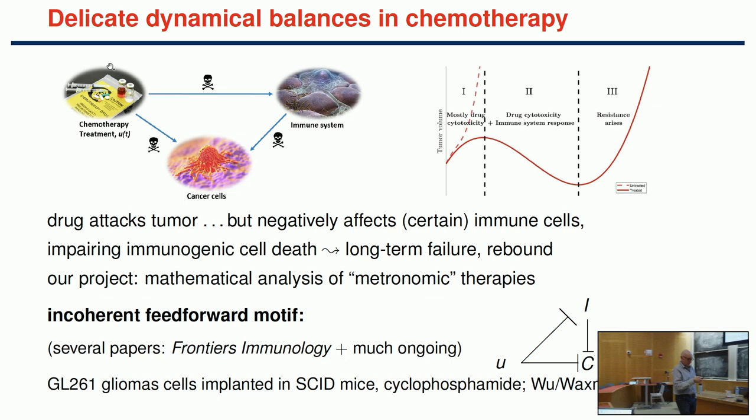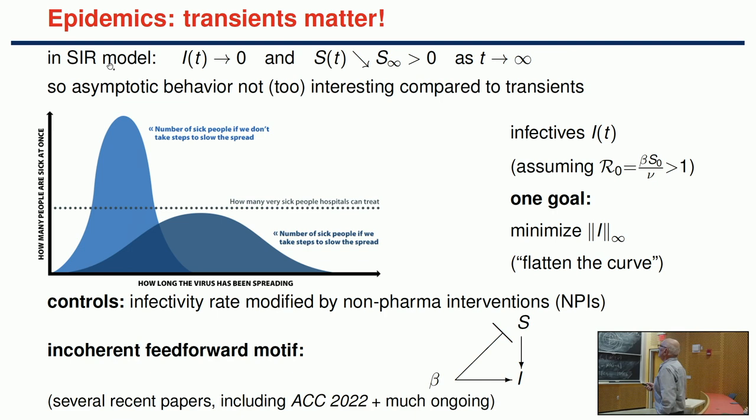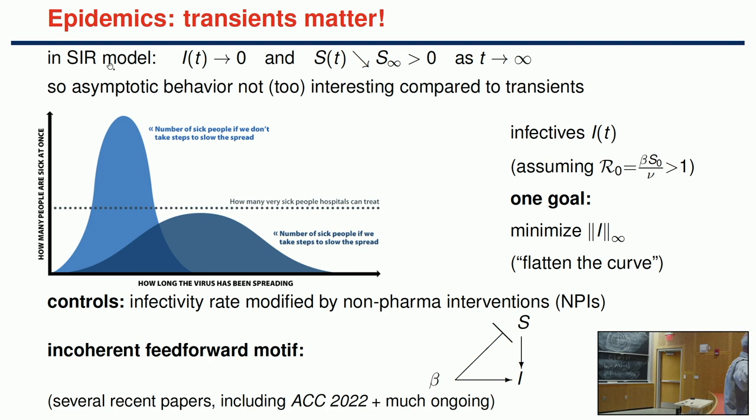A question from the audience: in these diagrams, does the bar mean affecting negatively? Yes—in biology, you draw arrows; a bar or blunt-headed arrow in LaTeX means a negative effect. I'll get to that in a few minutes. This is not being rigorous; it's just setting up some intuitions.